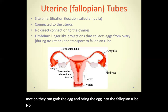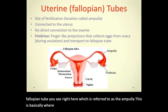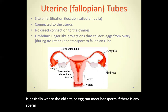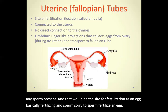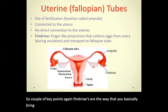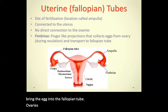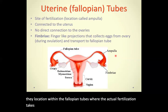As the egg travels through the curvature of the fallopian tube, it reaches a region referred to as the ampulla. This is where the oocyte can meet a sperm if any is present, making it the site for fertilization. Key points: fimbriae bring the egg into the fallopian tube; ovaries and fallopian tubes are not directly connected; and the ampulla is the location where fertilization takes place.